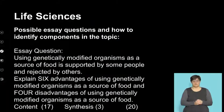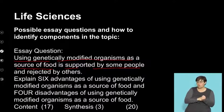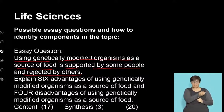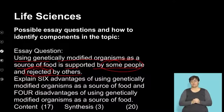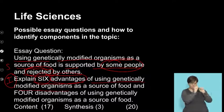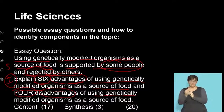Let's try another essay. The next essay question: 'Using genetically modified organisms as a source of food is supported by some people and rejected by others.' It's important to read that statement once more. The concept here is that GMOs as a source of food have been supported by some individuals and rejected by others. The instruction is: explain six advantages of using genetically modified organisms as a source of food, and give four disadvantages of using genetically modified organisms as a source of food.